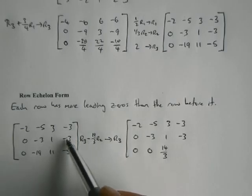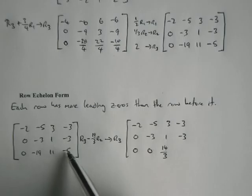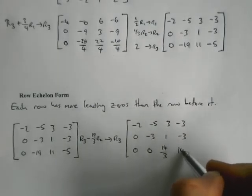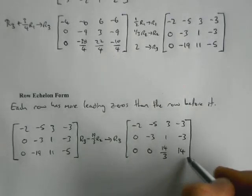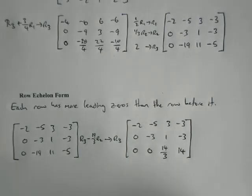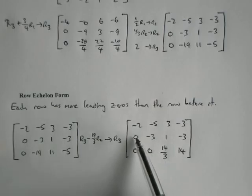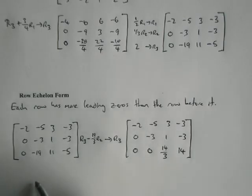To do that we need to understand what we mean by what's called row echelon form. A matrix which is in row echelon form has each row having more leading zeros than the row before it.